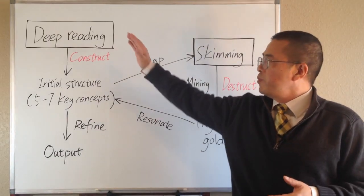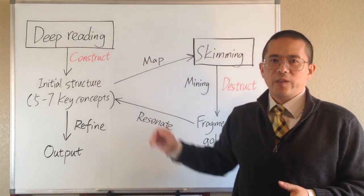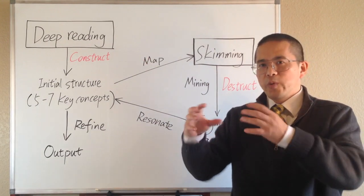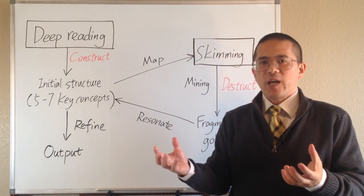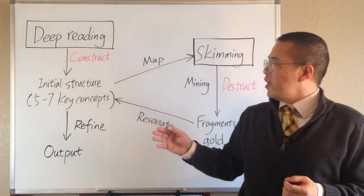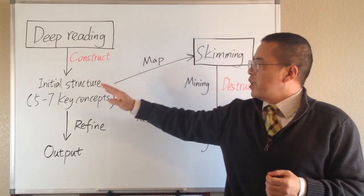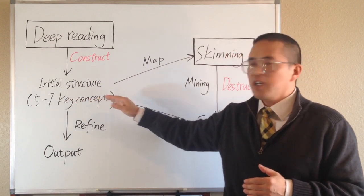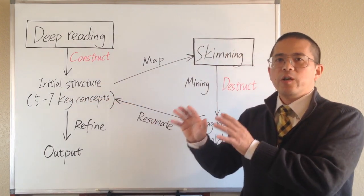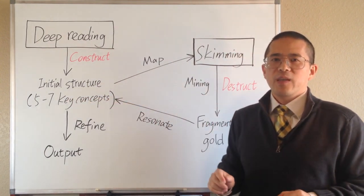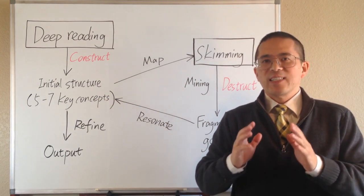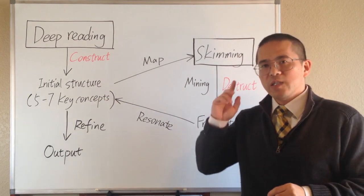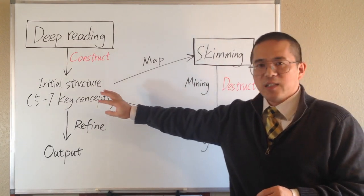After we complete some deep reading on a certain topic, we should be able to break down and conceptualize the topic, and thus we can construct an initial structure that includes 5-7 key concepts that are essential for understanding the topic. Then we can start skimming to enhance our knowledge on those key concepts.